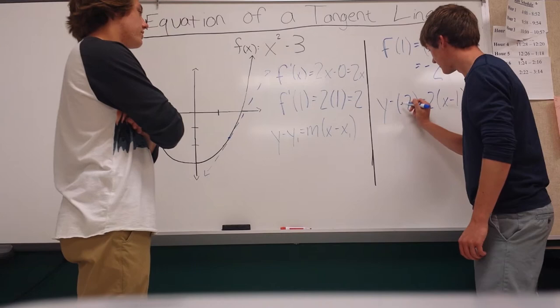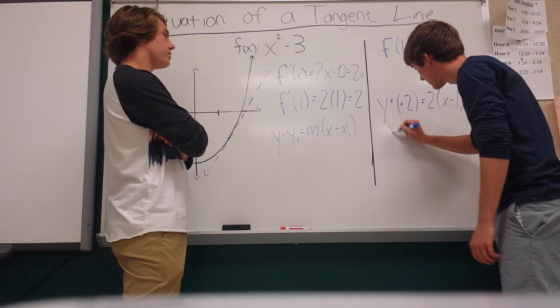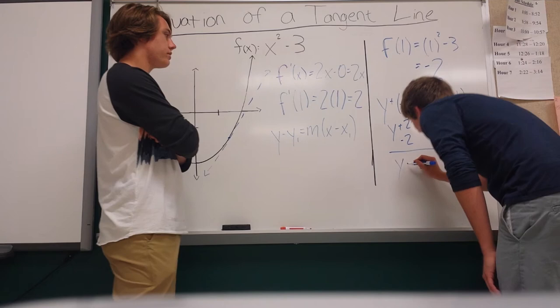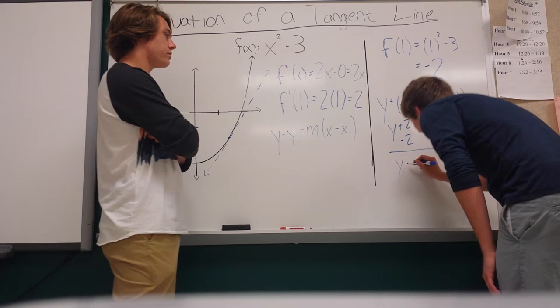So now the two negatives become addition. So it's y plus 2 equals 2x minus 2, and you distribute the slope. And then we'll just subtract over the 2. And you end up with y equals 2x minus 4, which is the equation of this dotted line.